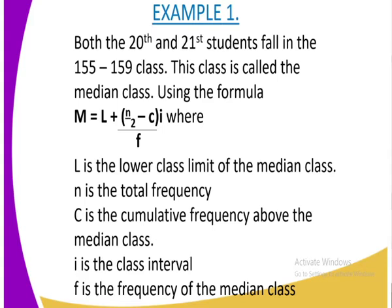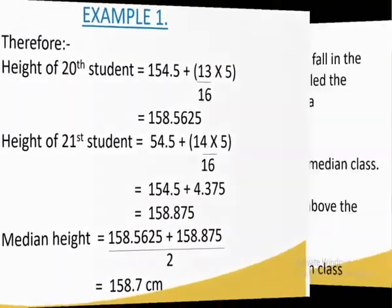This class is called the median class. Using the formula, actually this is the formula to get the median. You are going to have M is given by equal to L plus N over 2 minus C all into I, and everything you divide by F. And we have got a representation of the same here.